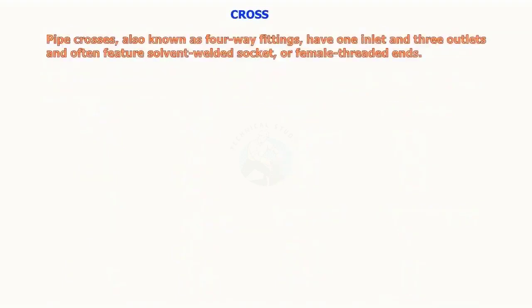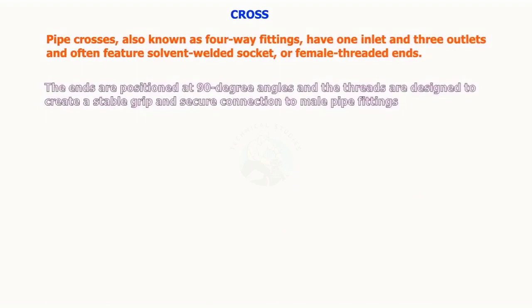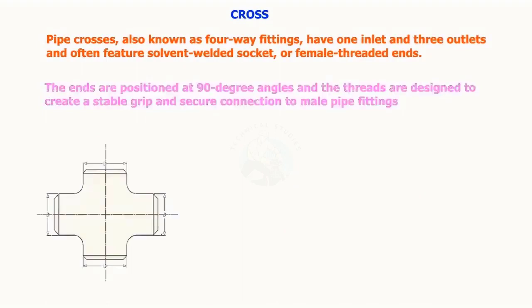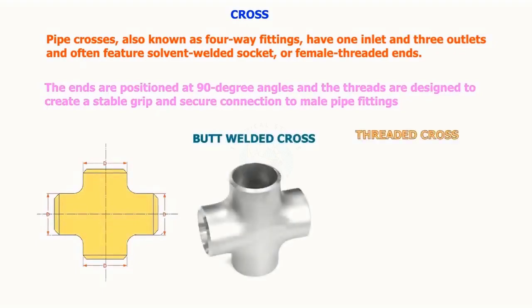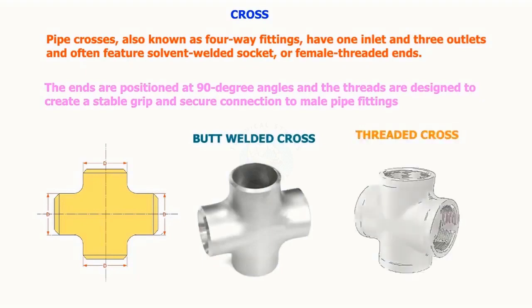Pipe crosses, also known as four-way fittings, have one inlet and three outlets and often feature solvent-welded socket or female-threaded ends. The ends are positioned at 90-degree angles, and the threads are designed to create a stable grip and secure connection to the male pipe fittings.